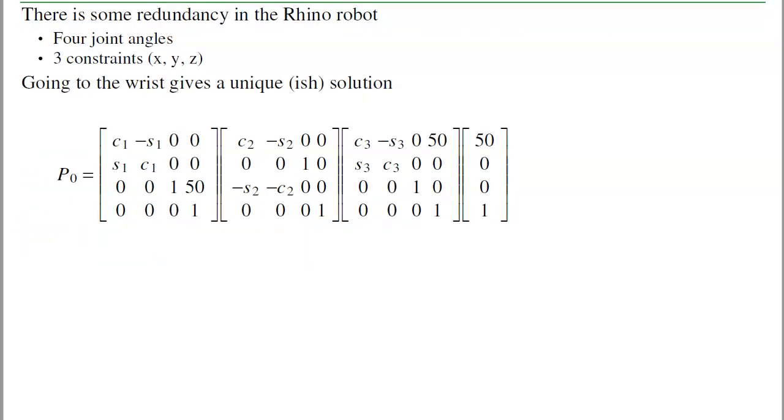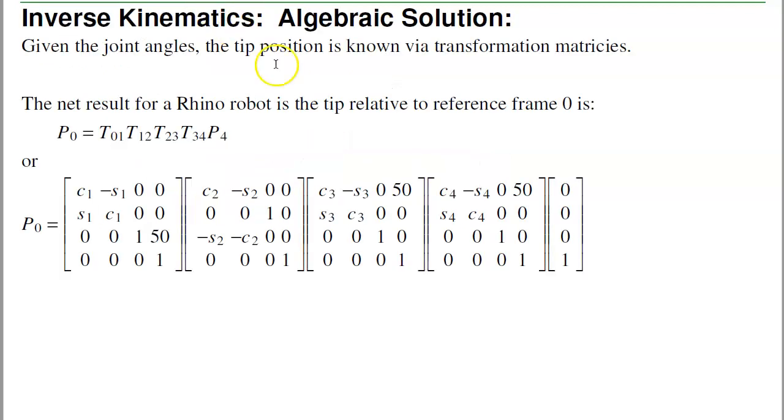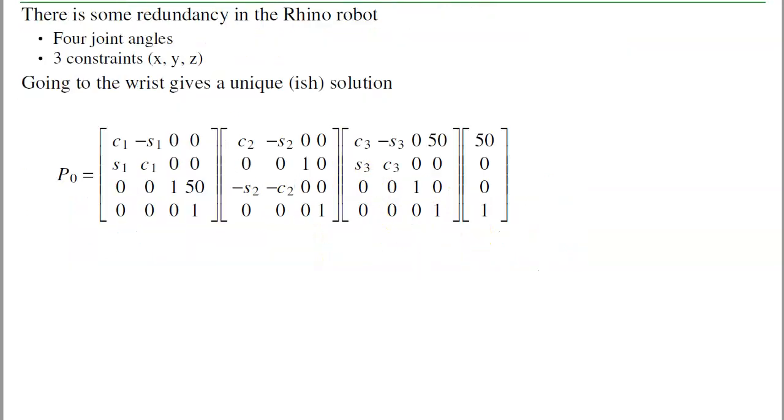If you look at the Rhino, I've got a slight problem. I've got that wrist. That wrist gives me an extra degree of freedom, so I've got four degrees of freedom, three constraints. So instead, let's force the end effector to be pointing straight down. What that does is it forces theta 4 plus theta 3 plus theta 2 equals 0.